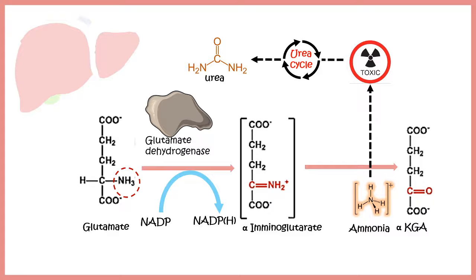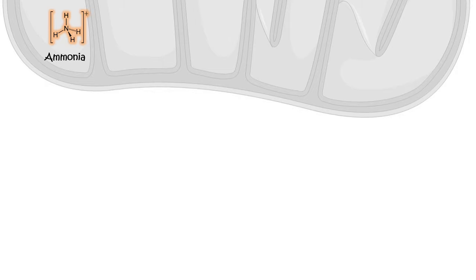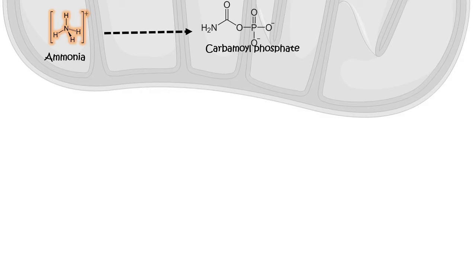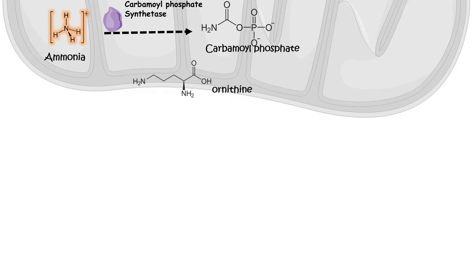Ammonia gets converted to urea by the urea cycle. The urea cycle takes place in the liver hepatocytes — a portion in the mitochondria and a portion in the cytoplasm. In the mitochondria, ammonia derived from glutamate by glutamate dehydrogenase is used to generate carbamoyl phosphate, with the help of the enzyme carbamoyl phosphate synthetase. ATP is required to drive this process, and carbamoyl phosphate is the first product of the urea cycle.